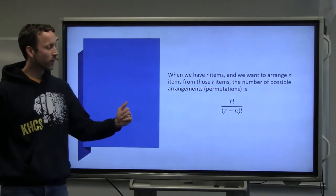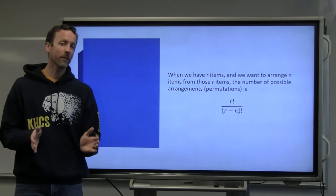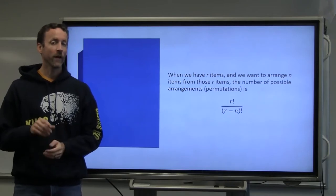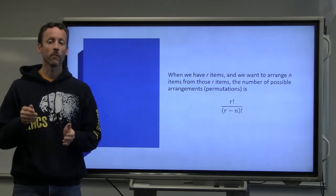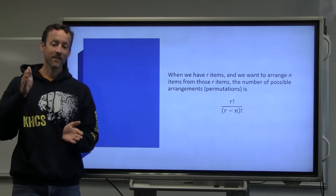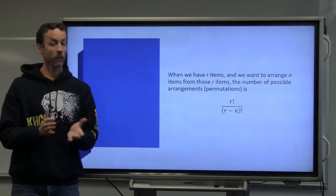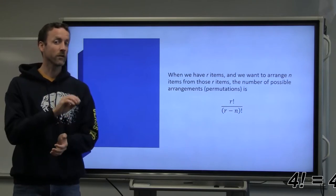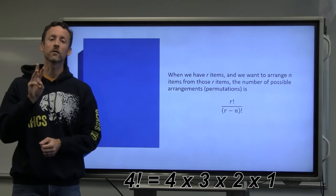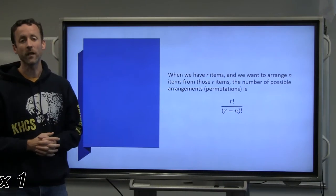We would use r factorial over the quantity of r minus n factorial. Factorial stands for multiplication of consecutive numbers down to one. For example, if I had four factorial, that would be four times three times two times one. It's just an easy way to notate.